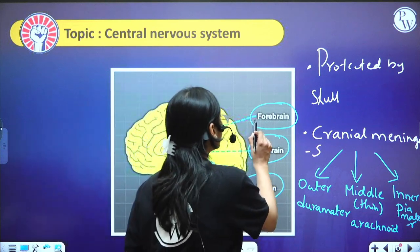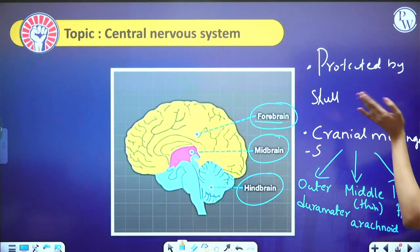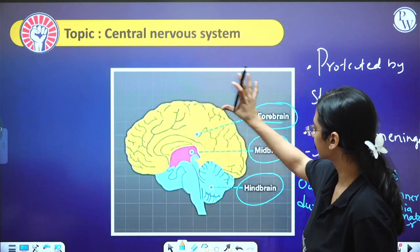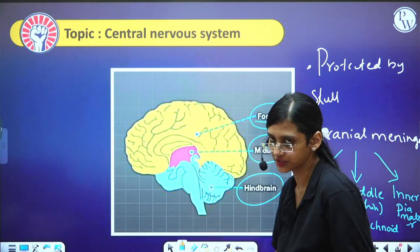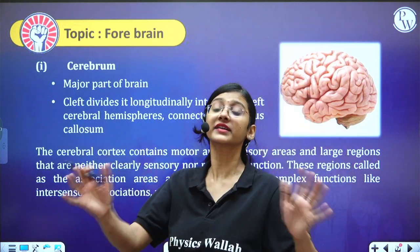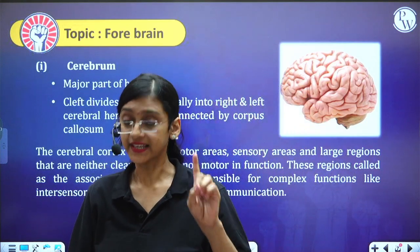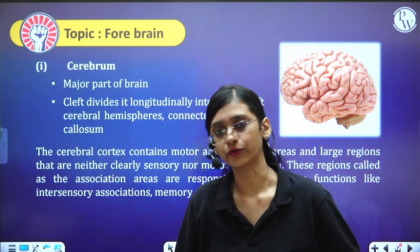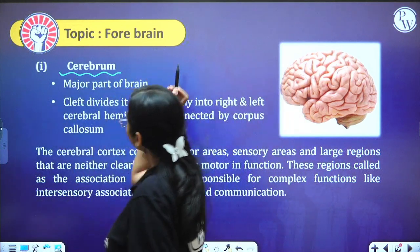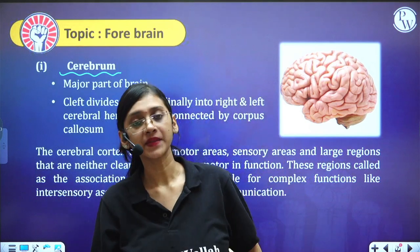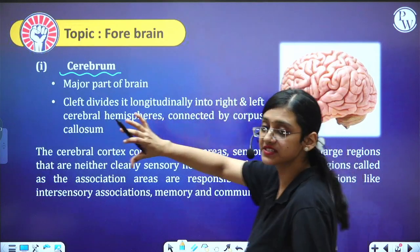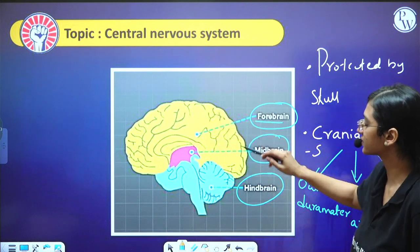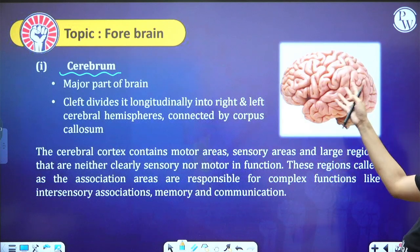Let us study the forebrain, which is the uppermost and largest part of the brain. The forebrain is further divided into three parts: cerebrum, thalamus, and hypothalamus. The cerebrum is the part of the forebrain present at the major place of the brain — it is the largest part.